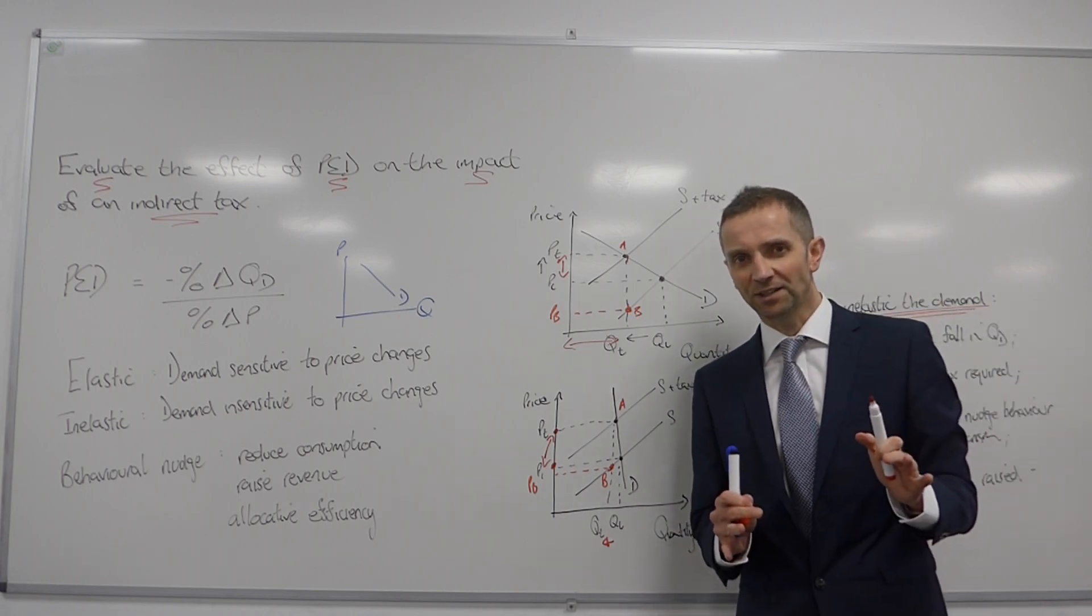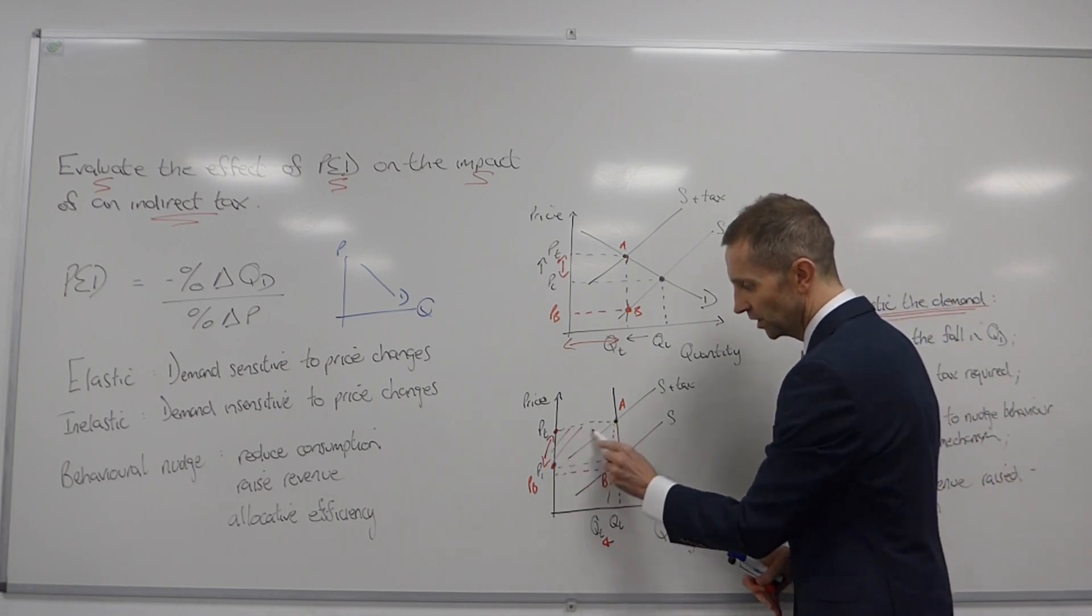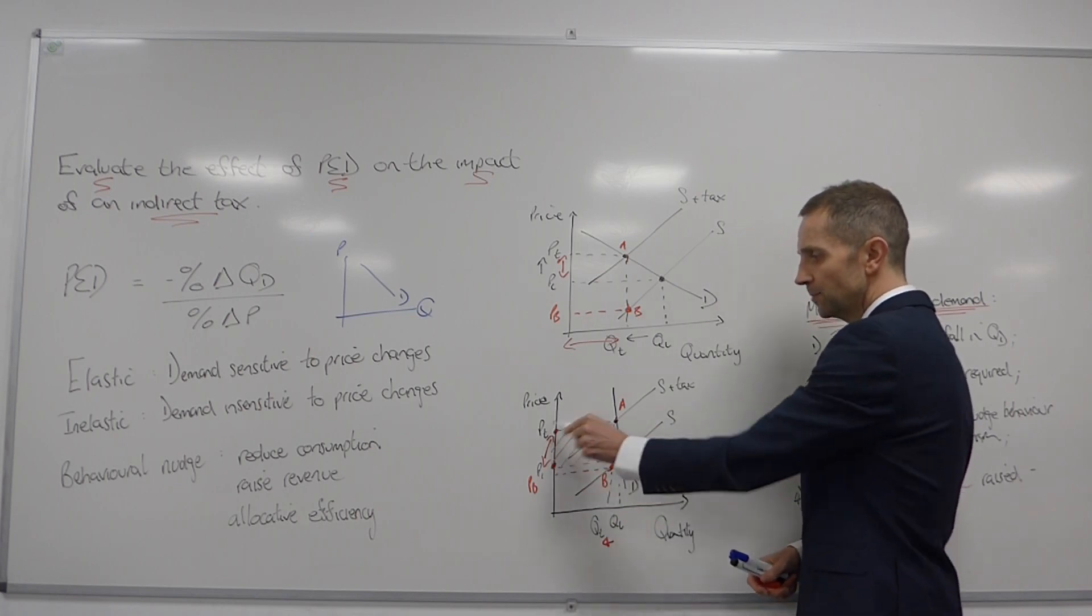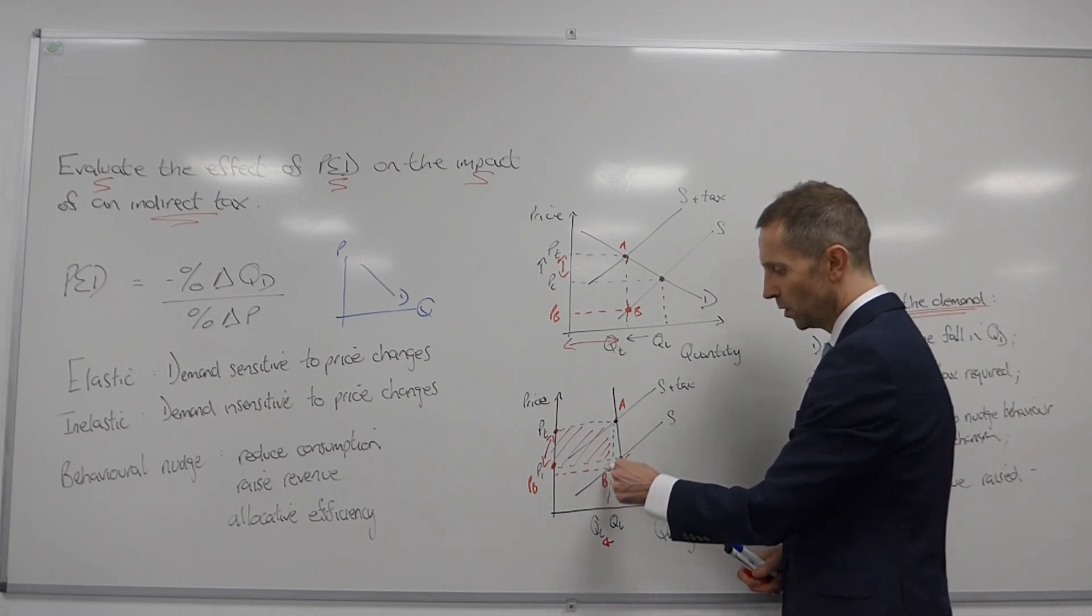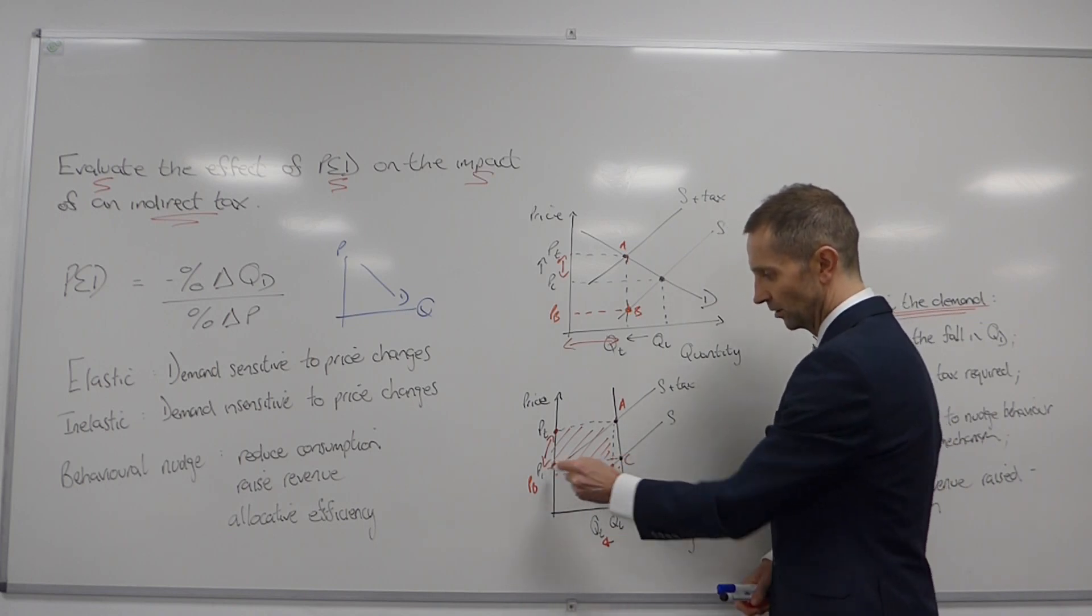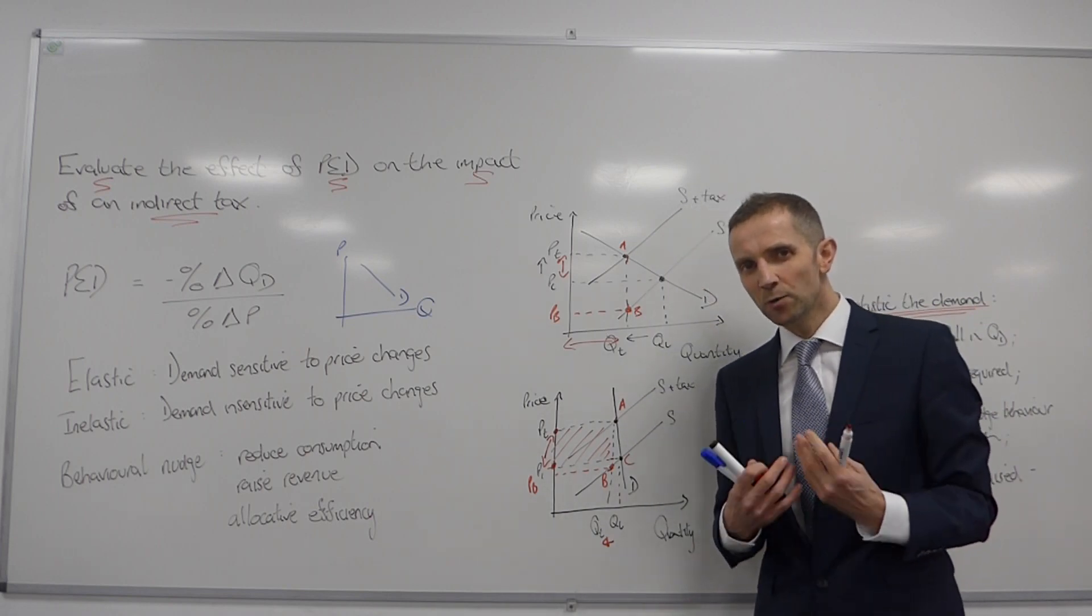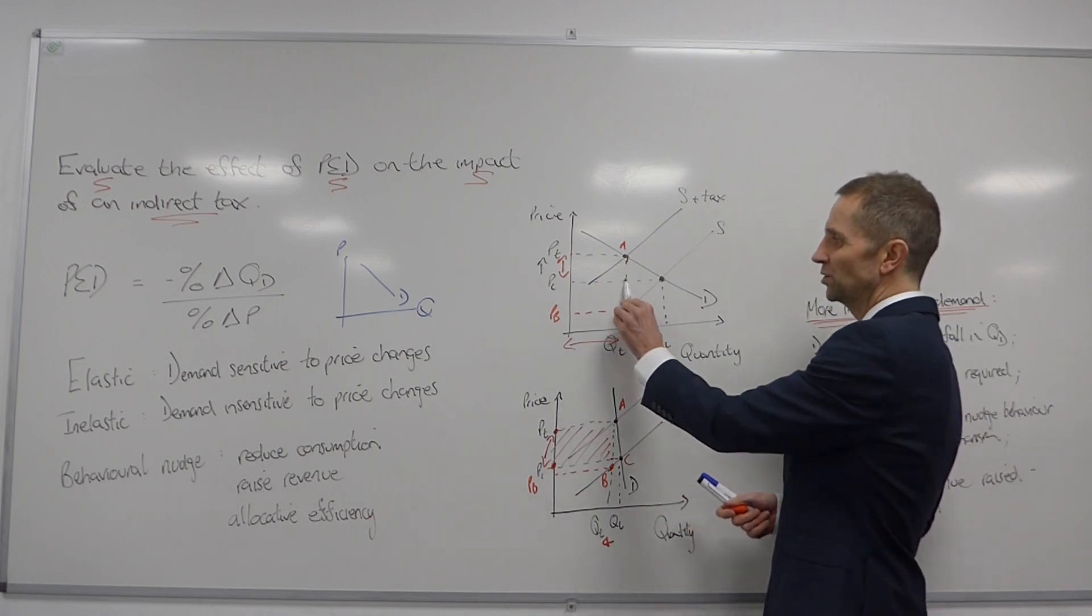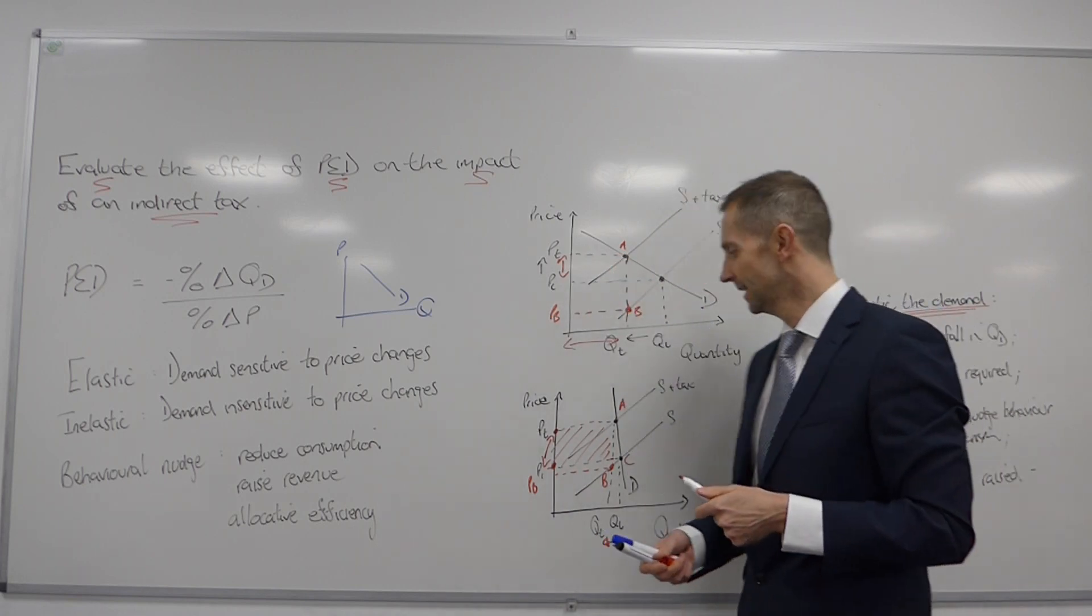The interesting thing to note in this instance is, of course, the proportion of the tax here, which is now being paid by the consumer. Overwhelmingly, I'll just shade this area here. So, P1, call that C, A, Pt, that is now being borne by the consumer. Whereas, this much smaller section beneath, so that would be Pb, B to here and across, that is being borne by the producer. So, overwhelmingly, the onus, the burden is being placed upon the consumer. Whereas, in this case, you can see it's almost a sort of 50-50 split in that respect.